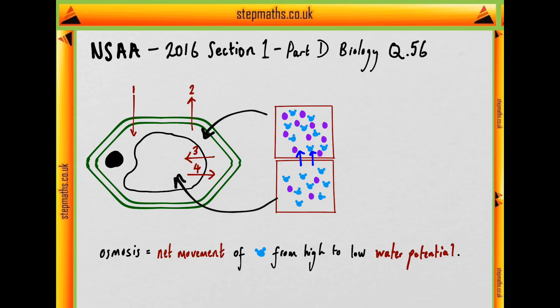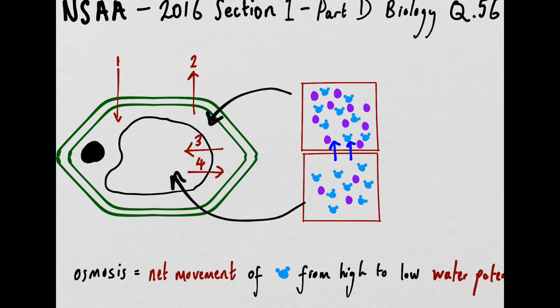So we can instead model the vacuole and the cytoplasm as again having a water potential gradient. So we can have movement from the now higher water potential vacuole into the more concentrated and therefore less water potential having cytoplasm. So again there will be a water potential gradient and movement down it.